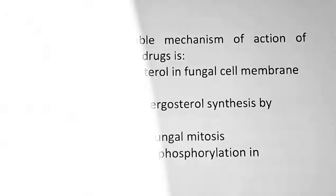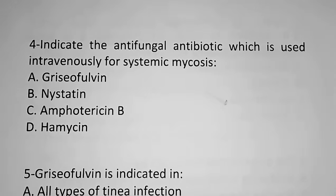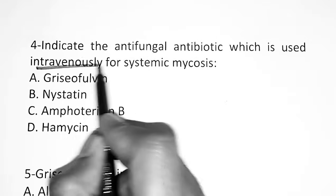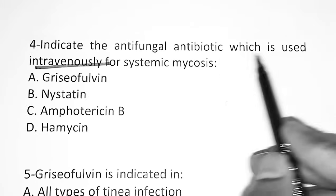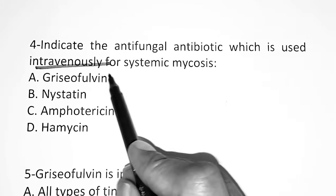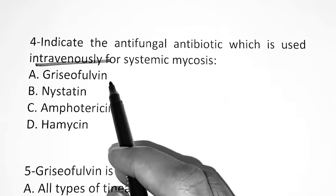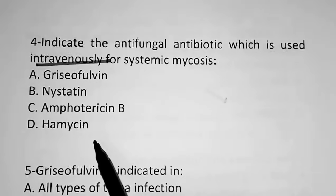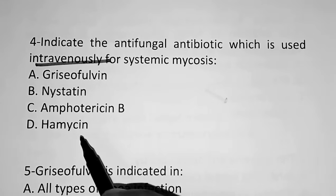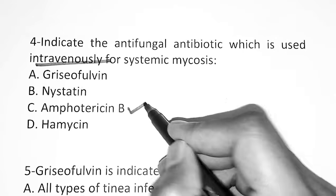The fourth question: Indicate the antifungal antibiotic which is used intravenously for systemic mycosis. Option A, griseofulvin. Option C, Amphotericin B. Option D, hamycin. The correct answer for this question is Amphotericin B — it is used intravenously for systemic mycosis.